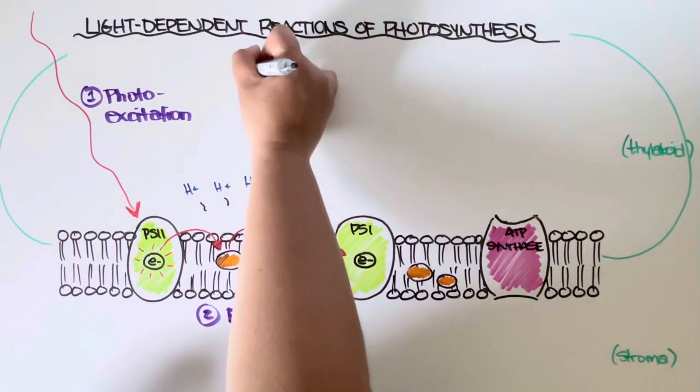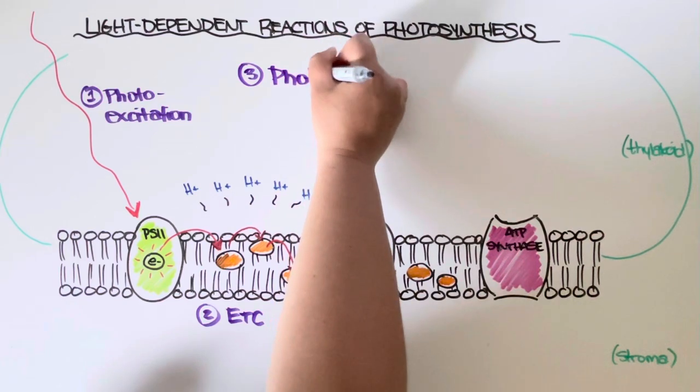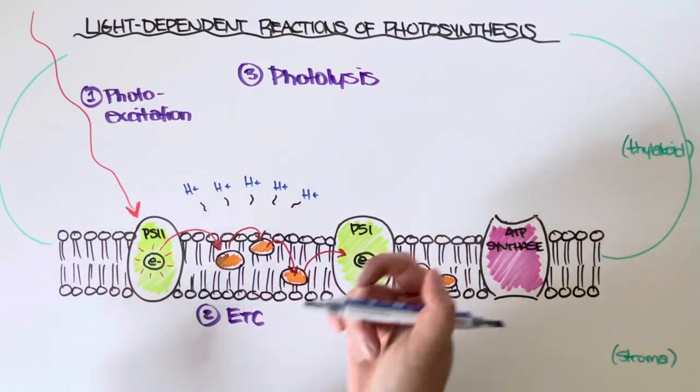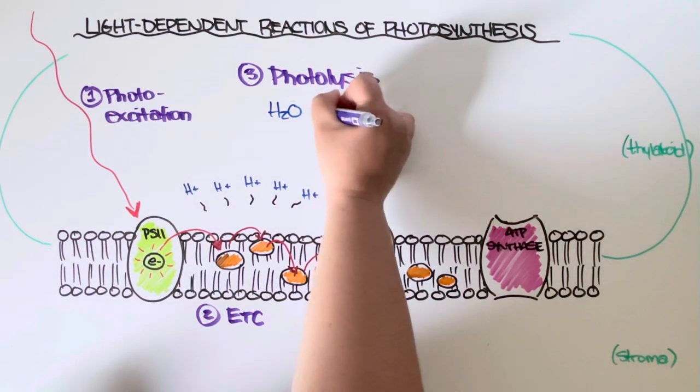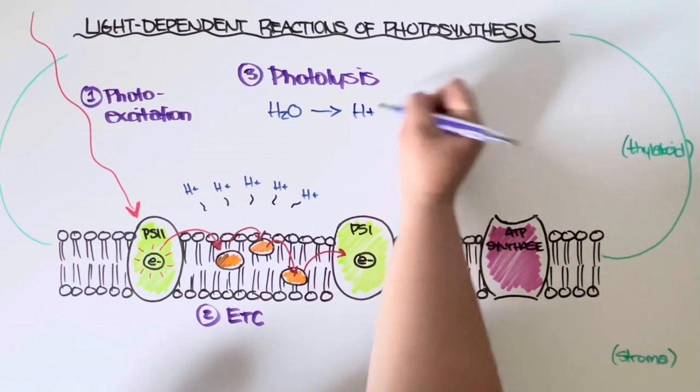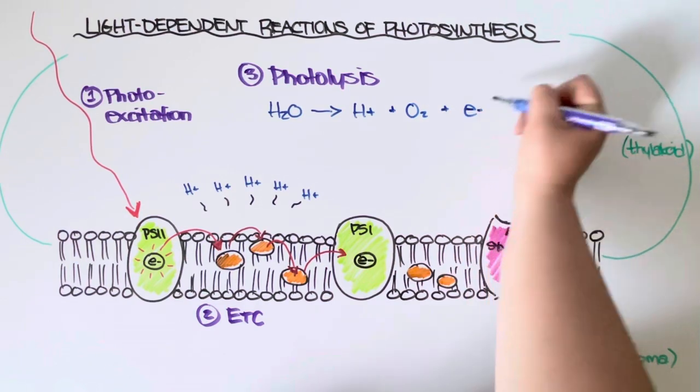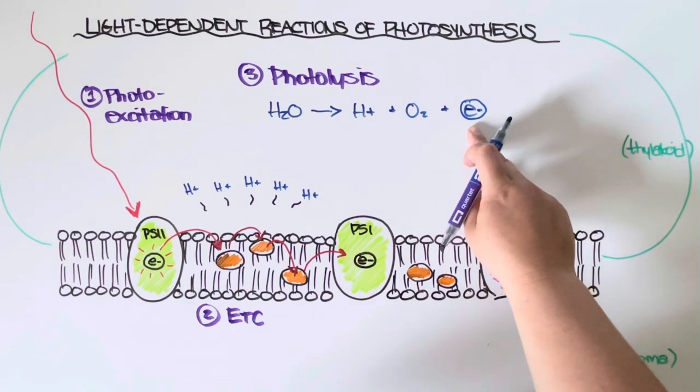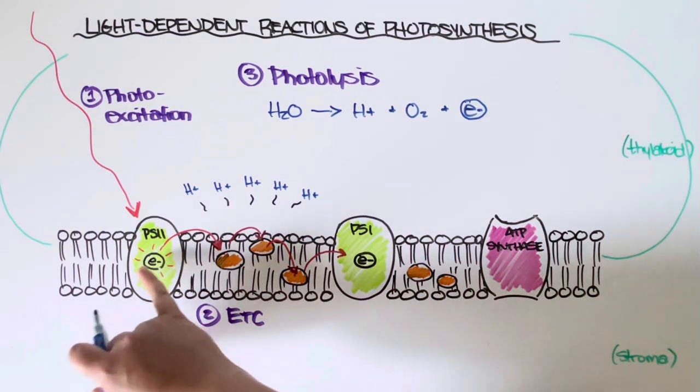Now, there's another process that helps to generate a hydrogen ion gradient. It's called photolysis. Photolysis is exactly what it sounds like. It's using, again, radiant energy from the sun to split this time water molecules. So we end up with hydrogen ions, oxygen molecules, and eventually some extra electrons. Now, the extra electrons that are generated from this reaction then go on to replace the electron that left photosystem II.